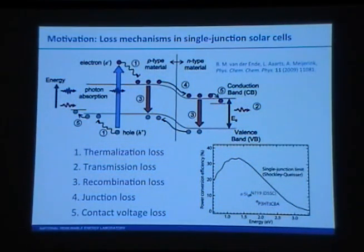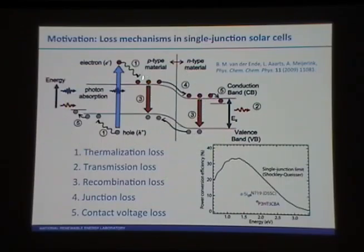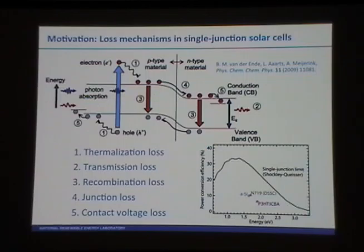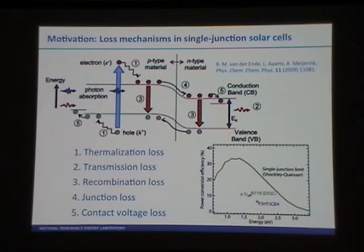As Gary mentioned, I'm going to give you a very brief introduction to a number of novel strategies for converting as much of the solar spectrum as possible. These are typically four to six slides on each topic, just giving you a little flavor of what goes on, and hopefully throughout the rest of the course you'll get a lot more information about a lot of these strategies. The motivation for these different strategies for harvesting as much of the solar spectrum as possible comes from the fact that in a single junction device there are a number of loss mechanisms.